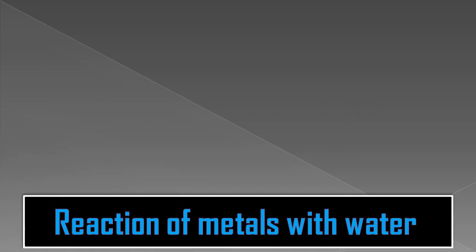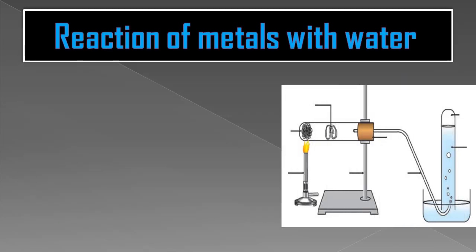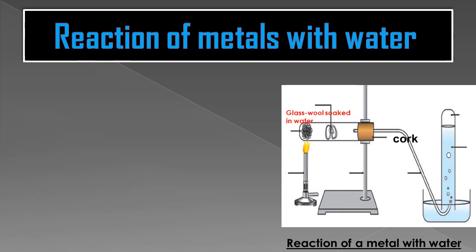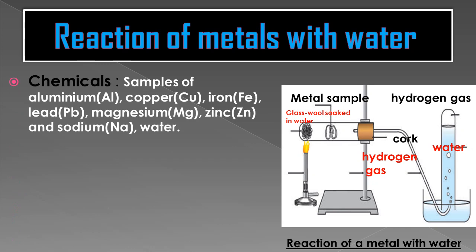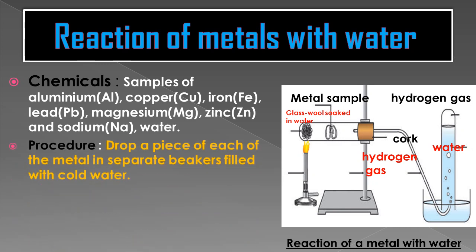The second reaction is the reaction of metals with water. The experimental setup shows a cork fitted on a glass tube containing wool soaked in water and a water column. A sample of metal wire is placed inside and hydrogen gas is produced when the metal reacts. Chemicals required are samples of aluminium, copper, iron, lead, magnesium, zinc, and sodium metal, along with water. We drop a piece of each metal separately into beakers filled with cold water and observe.